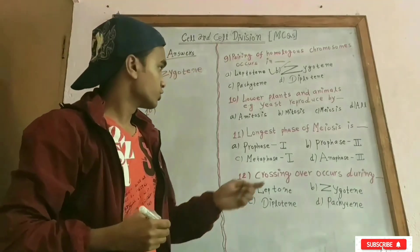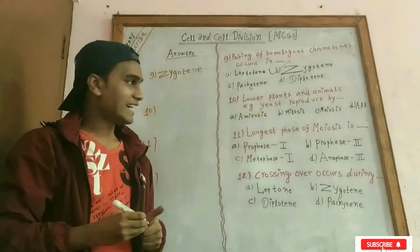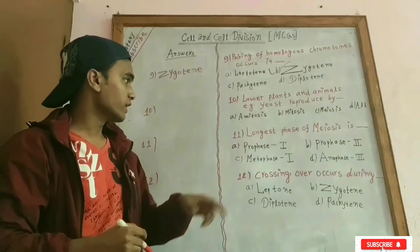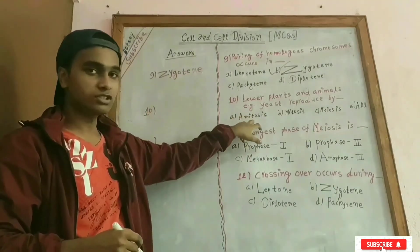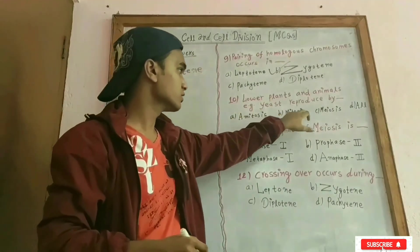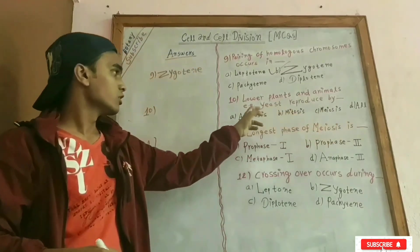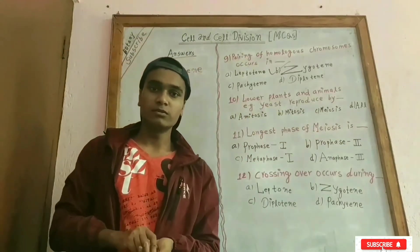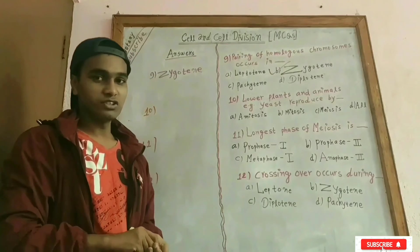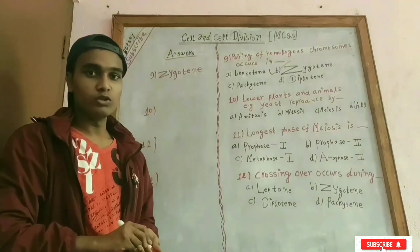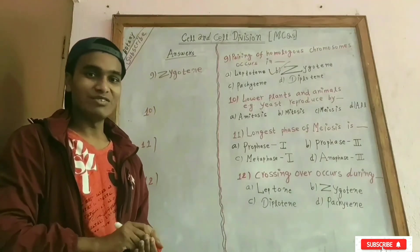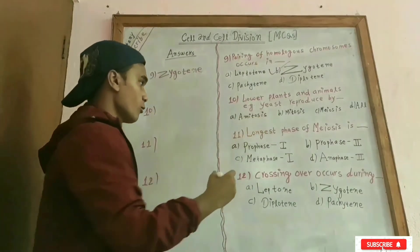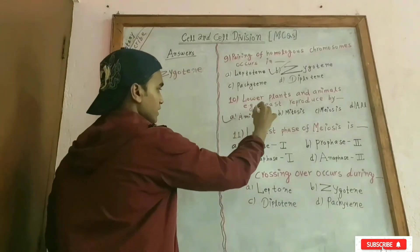Question number 10: lower plants and animals such as yeast reproduce by amitosis. Amitosis is a type of cell division in which there is no nuclear differentiation. Therefore yeast reproduces by amitosis cell division.